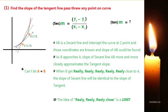The tangent slope relates to the secant line. AB is a secant line — it intercepts the curve at two points whose coordinates are known, so the slope of AB can be found. As AB gets closer and closer, the slope of the secant line AB will more and more closely approximate the tangent slope.